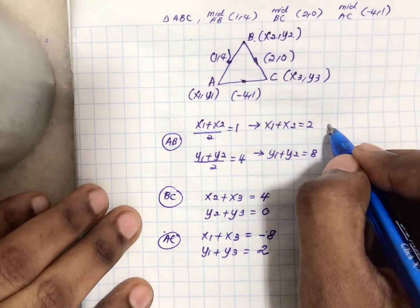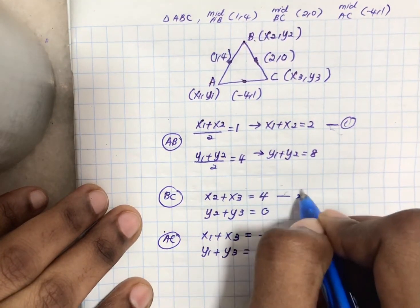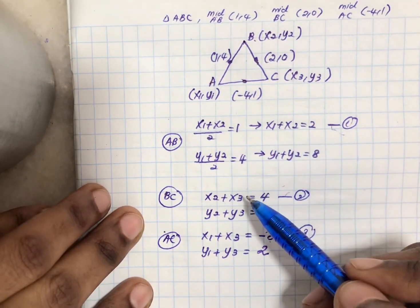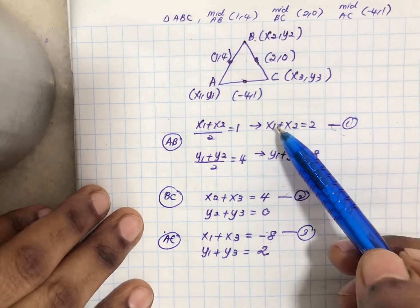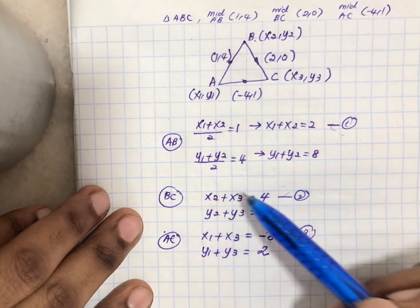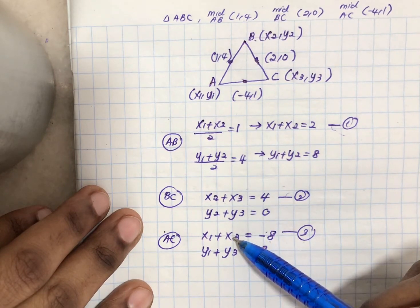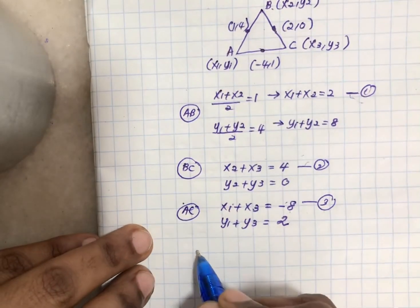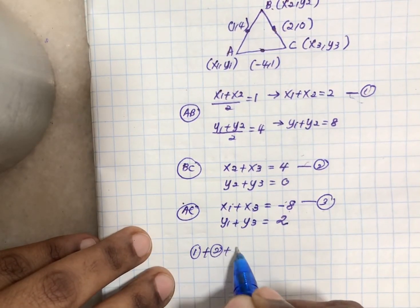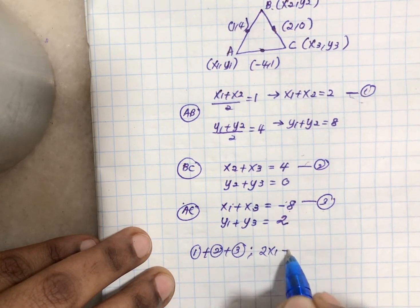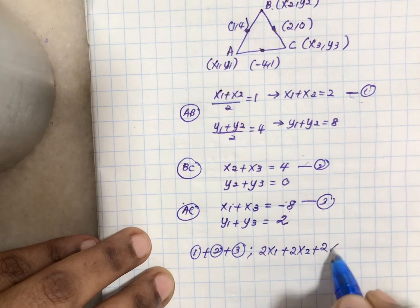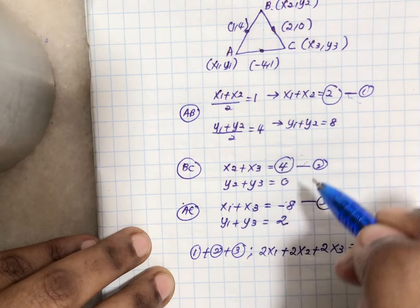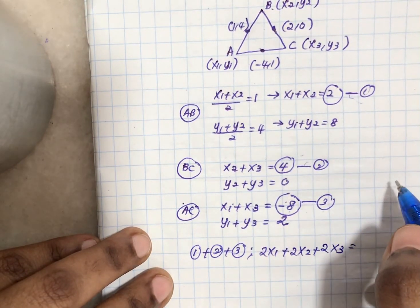Let's label these as equations 1, 2, and 3. My aim is to get x1, x2, and x3. Looking at the x variables, I realize each one appears in exactly two equations. So I'm going to add up equations 1, 2, and 3. That gives me 2x1 + 2x2 + 2x3 = 2 + 4 + (-8) = -2.